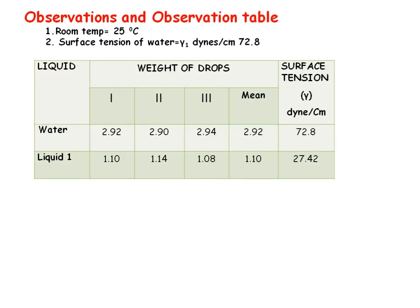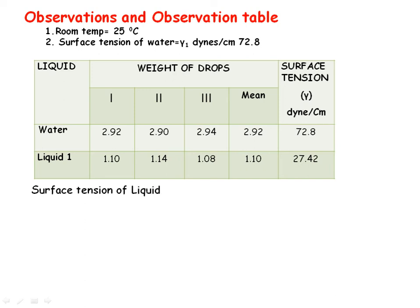Observations: Room temperature is 25 degrees centigrade; surface tension of water γ₁ is 72.8 dyne per centimeter. Make a table with columns for liquid, weight of drops, and surface tension. For water, three readings gave weights of 2.92, 2.93, and 2.94, giving an average weight M₁ of 2.93. For the test liquid, three readings gave 1.10, 1.14, and 1.08, giving an average weight M₂ of 1.10.